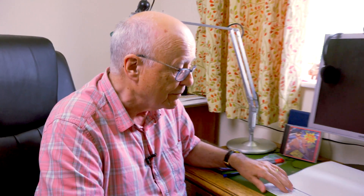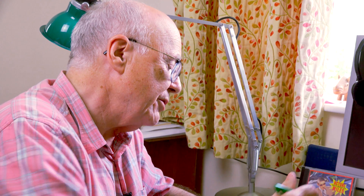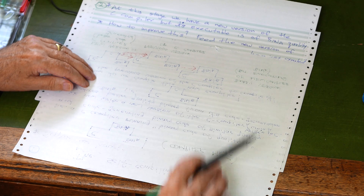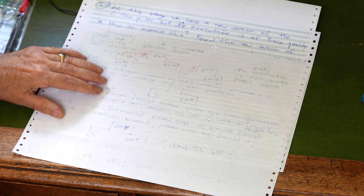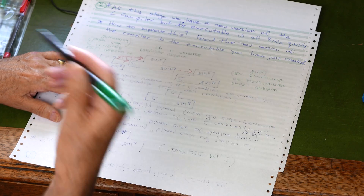Maybe it's still slow — maybe binary A is congenitally slow, not being very well written at all. But at least it works. Is there some final step? Yes, there is — that would get rid of any vestigial remains of bin A in all of this process cycle. We've got a new version of the C compiler, but its executable is only still of bin A quality. How to improve it? Feed the new version of the compiler to the executable that you have just created.